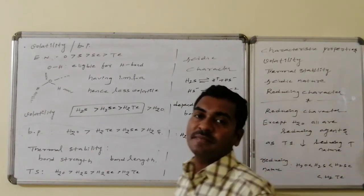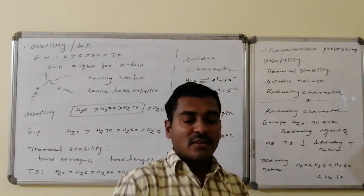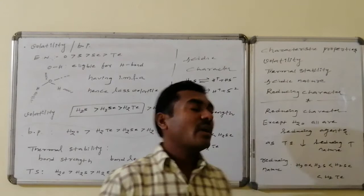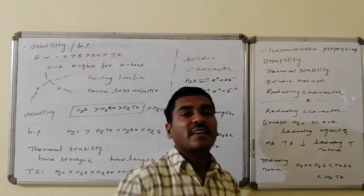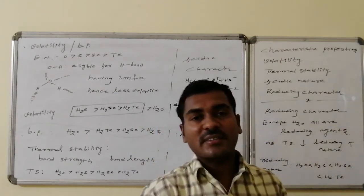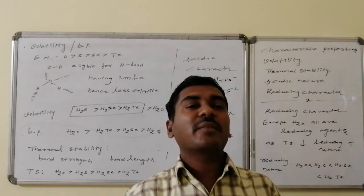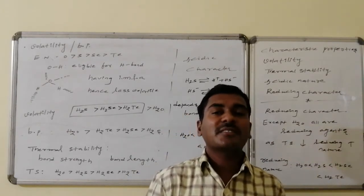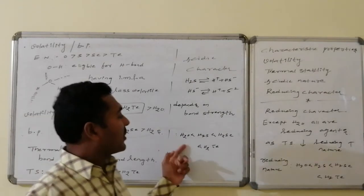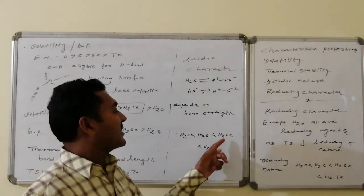Acidic character refers to how easily a molecule dissociates into H⁺ ions and an anion. This also depends on bond strength—higher bond strength makes dissociation more difficult. Consequently, the acidic character increases from water down the group: hydrogen sulfide is more acidic than water, hydrogen selenide is more acidic than hydrogen sulfide, and hydrogen telluride is the most acidic.